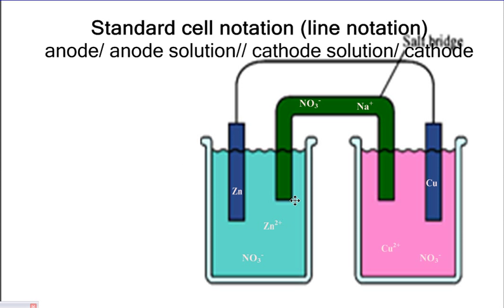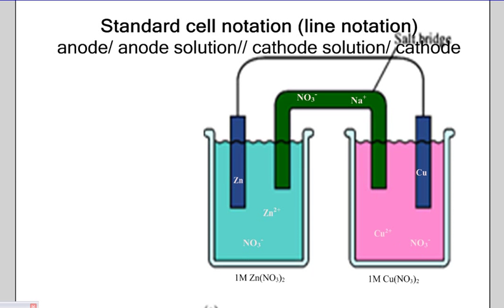So let's say that this solution over here is one molar, and same on this side, that you have one molar zinc nitrate and one molar copper nitrate. The standard cell notation for this would be zinc, zinc 2+, copper 2+, copper. So it would look like this.